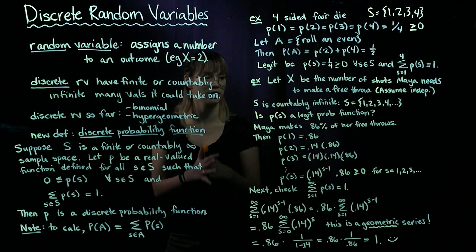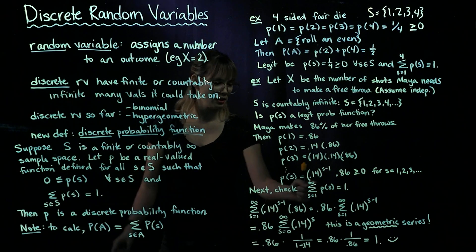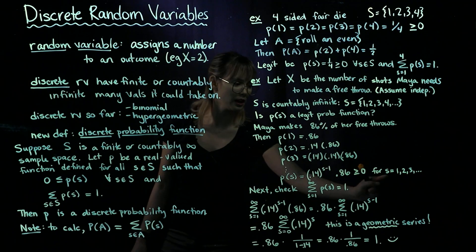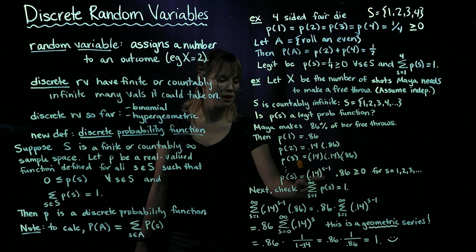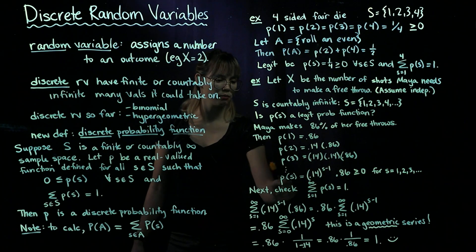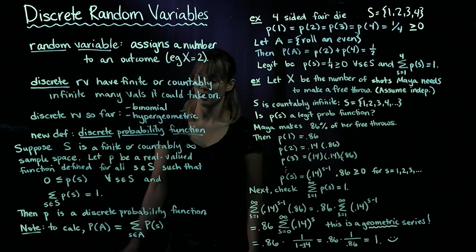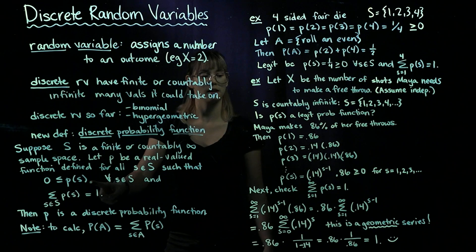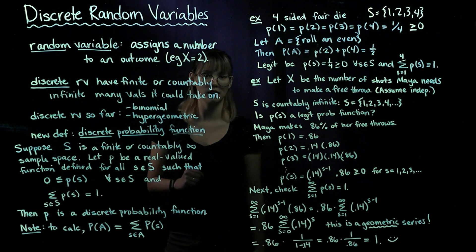So we want to check if this is a legit probability function. First, we need to make sure all of these probabilities are greater than or equal to 0. No matter what S we plug in — going from 1, 2, 3, 4 all the way up — P of S is always going to be greater than or equal to 0. So that is checked. Now we need to make sure that the sum of P of S from S equals 1 to infinity is going to equal 1.